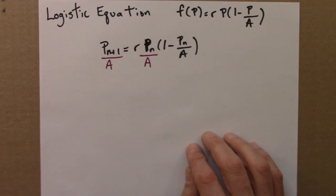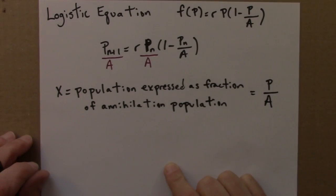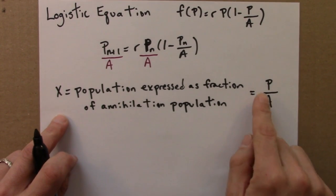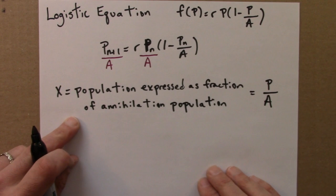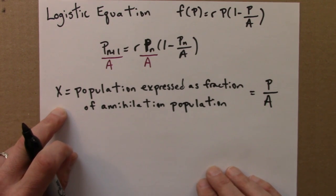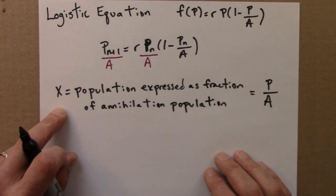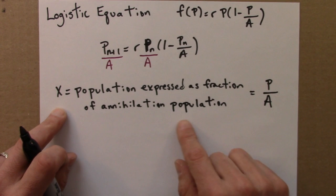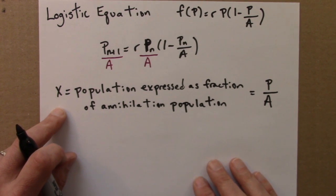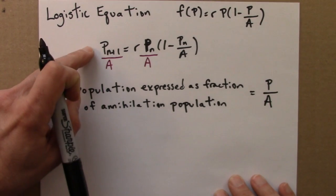So I'm going to define a new variable x as follows. So I'll define this new variable x as p divided by a. It's the population, but expressed as a fraction of the annihilation population. So if x equals 0.5, that means we're halfway to the annihilation or apocalypse value. We're halfway to the maximum possible number. If x is 0.8, then we're 80% of the way. If x is 0.1, we're just 10% of a. So x, then, is a number that's always between 0 and 1.